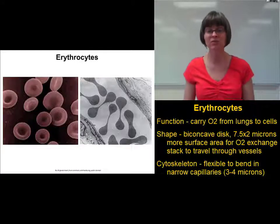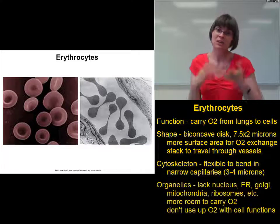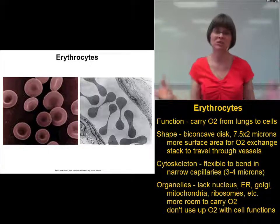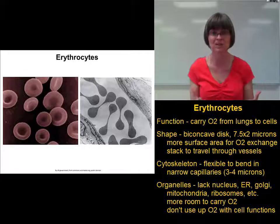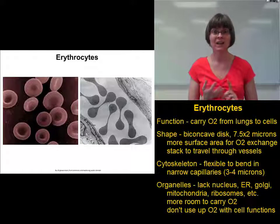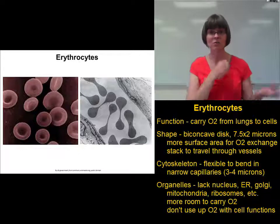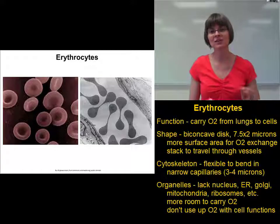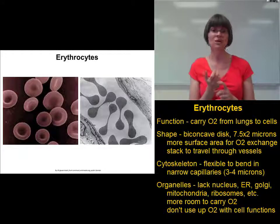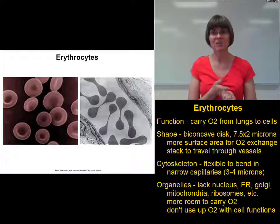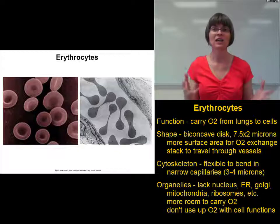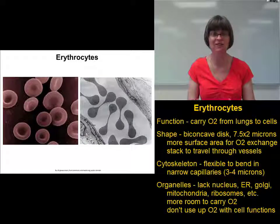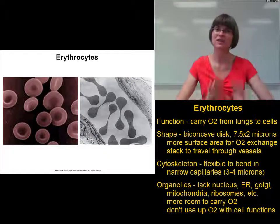Another thing that makes erythrocytes quite different from other cells is that they lack most organelles. Vesicles, Golgi apparatus, smooth and rough endoplasmic reticulum, mitochondria, the nucleus, ribosomes — all of those are missing in erythrocytes. This is important for a couple of reasons. One, it leaves more room for transporting oxygen. The other reason is that without those organelles, erythrocytes don't carry out cell division, don't use cellular respiration, and don't replicate DNA — so they're not using up the oxygen they carry. They're basically oxygen-carrying machines.